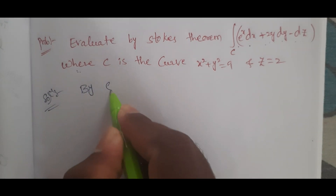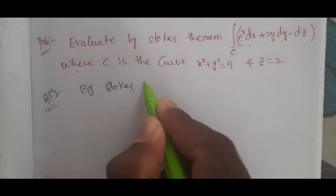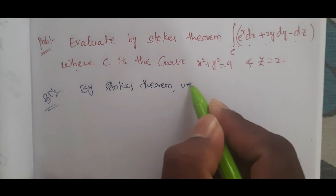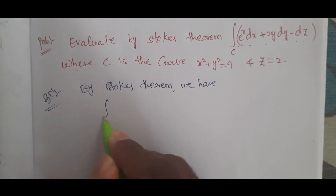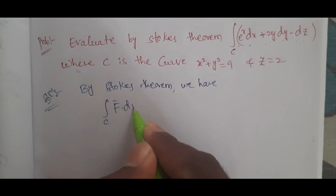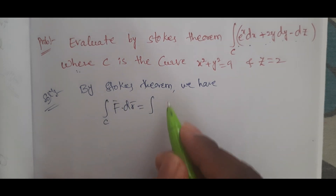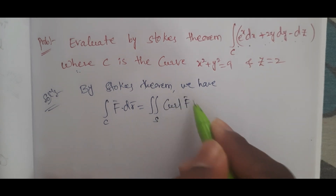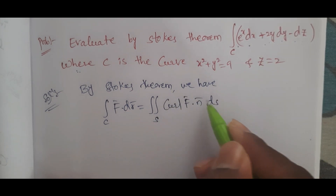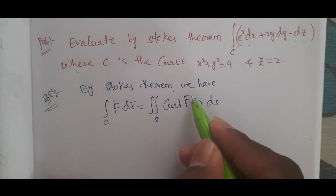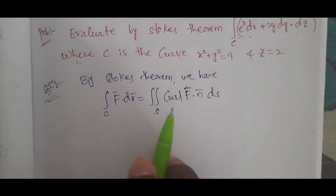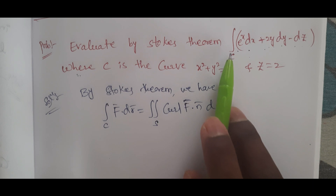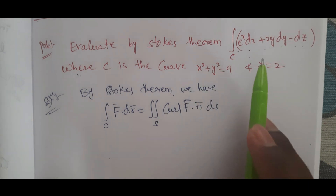By Stokes theorem we have integral c F·dr equals integral s curl F·n ds. Here we transform the LHS line integral to a surface integral.